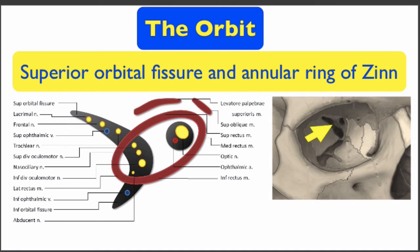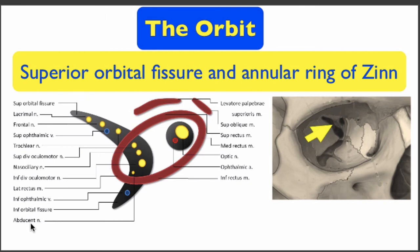The superior orbital fissure and the annular ring of Zinn. The contents of the superior orbital fissure are: the lacrimal nerve, frontal nerve, superior ophthalmic vein, trochlear nerve, superior division of oculomotor nerve, oculomotor nerve, inferior division of oculomotor nerve, inferior ophthalmic vein, inferior orbital fissure, and the abducent nerve.